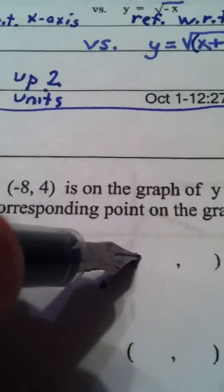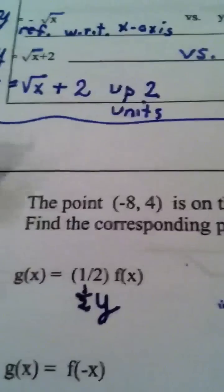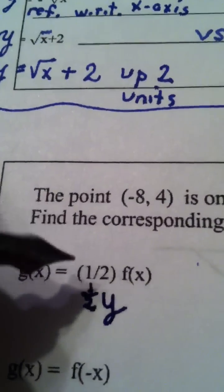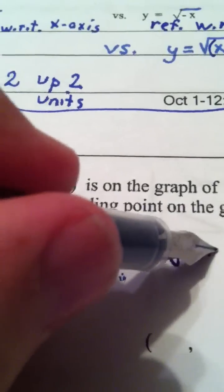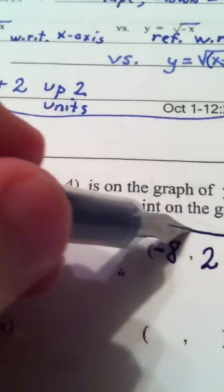Well, if I don't change the x value, it would still be -8. And if I take half of f(x), which is half of the y value, half of 4 is 2. And that's all they want to know.